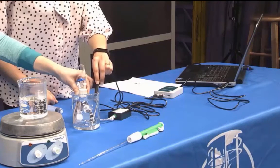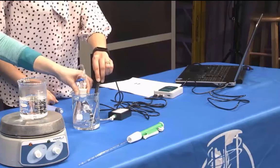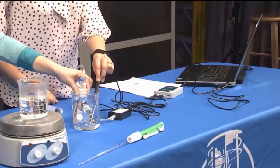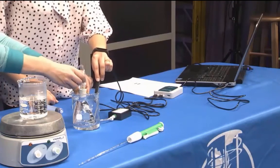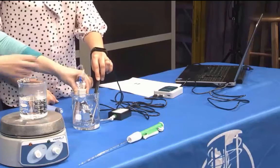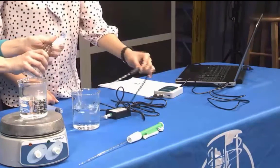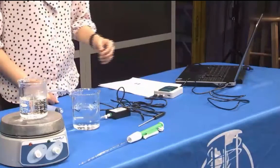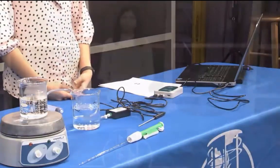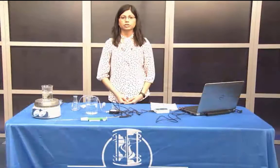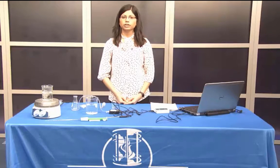After you have recorded the fifth set of readings, open the valve to release the pressure in the flask. Remove the flask from the water bath and take the stopper off the flask, and then dispose of the ethanol as directed. This is the complete procedure for completing the vapor pressure and heat of vaporization lab. Be sure to read your lab worksheet for some additional details.